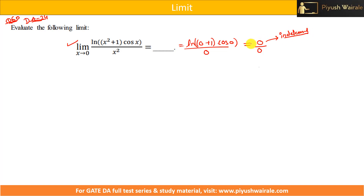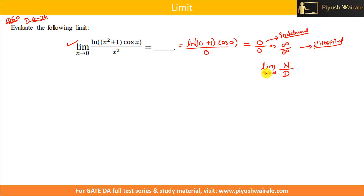This is an indeterminate form. If you come across a 0/0 or ∞/∞ form, then you can apply L'Hôpital's rule. We have discussed L'Hôpital's rule in the lectures. Suppose I have limit x tends to a with a numerator and denominator, and after putting the value of a I get 0/0 or ∞/∞ — then I can apply L'Hôpital's rule. Basically, I take the derivative of numerator and denominator separately.